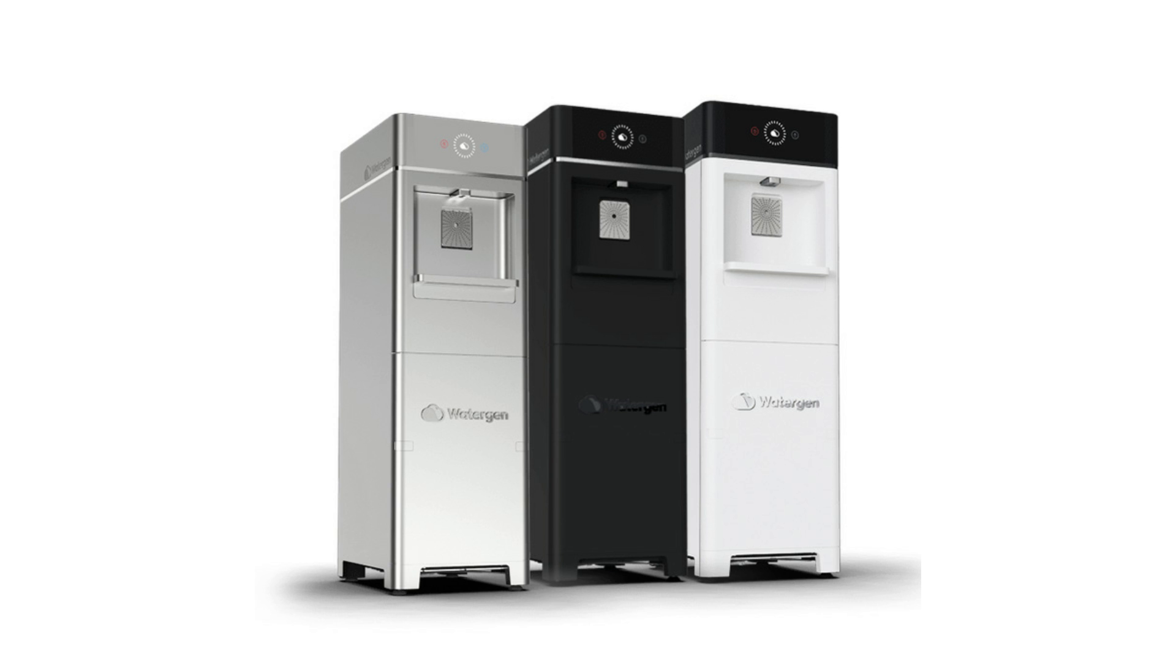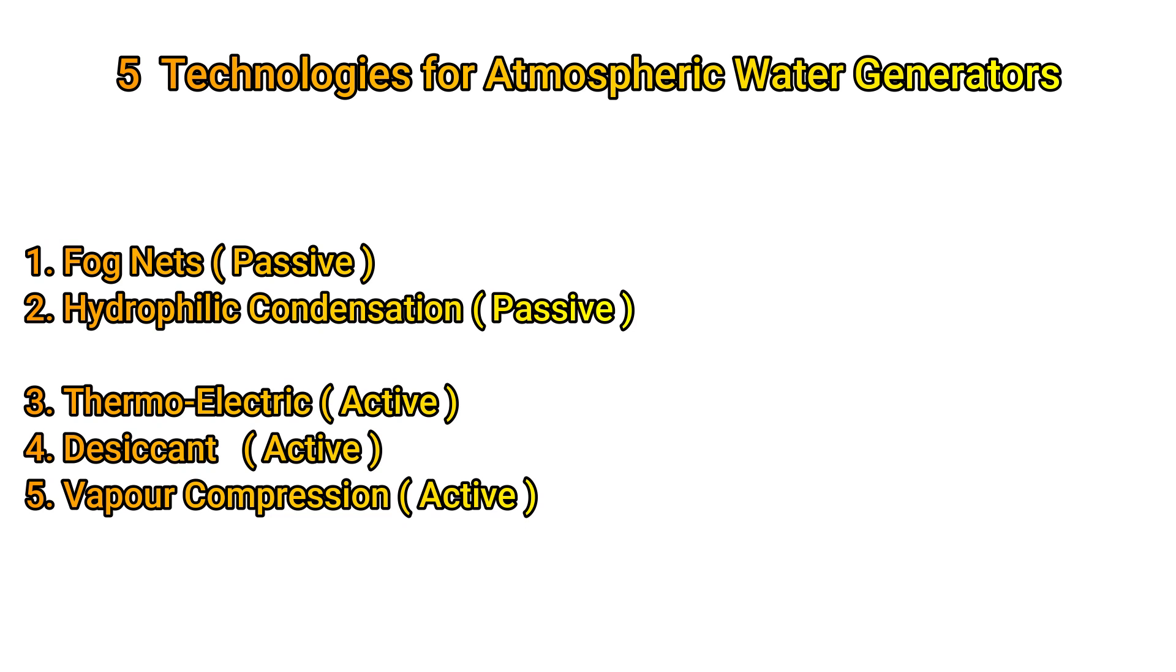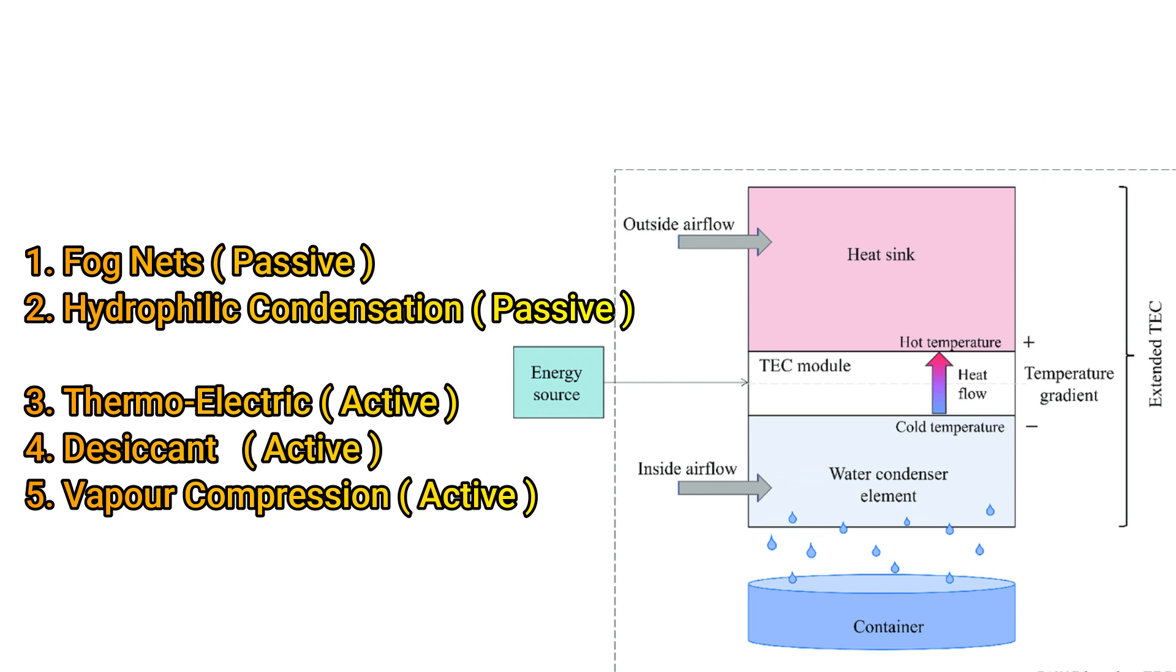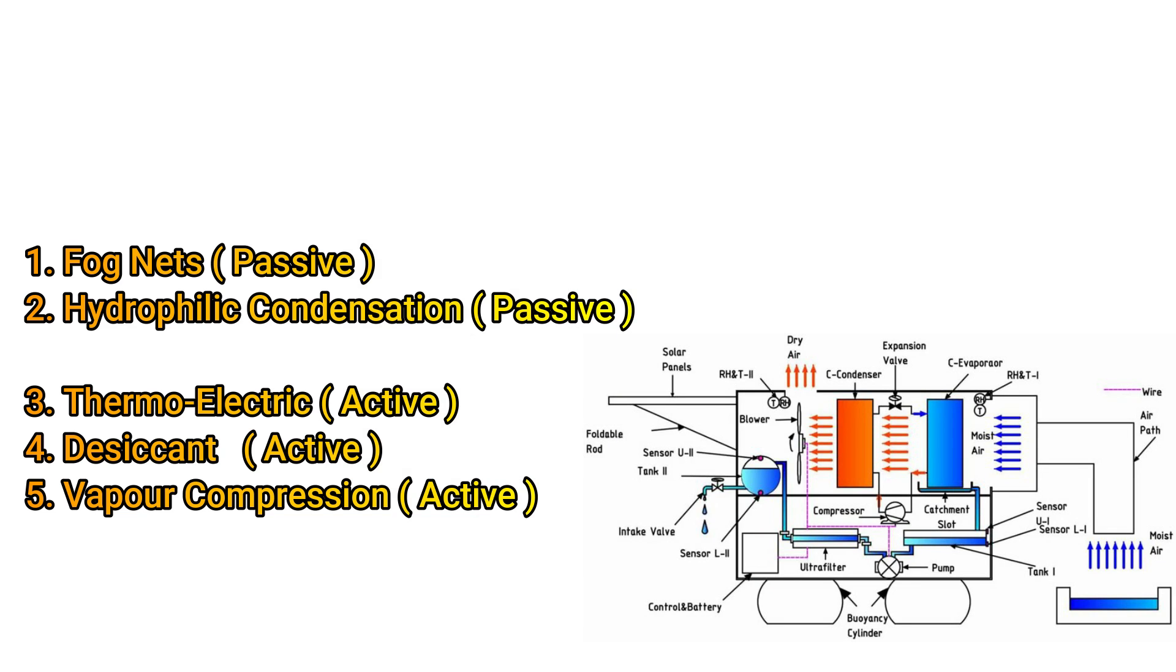As covered in our previous video, there are five technologies to accumulate water out of humid air. Two technologies are passive while three are active. The passive technologies include fog nets and hydrophilic condensation. The active technologies include thermoelectric generators, desiccant generators, and vapor compression generators.